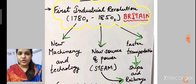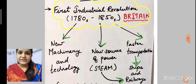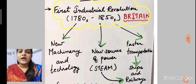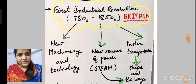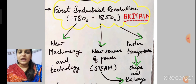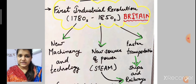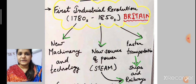In this chapter, we are going to focus on certain things about the Industrial Revolution. We will also learn about how it changed the lives of people. Let's discuss what the contents of this chapter are.